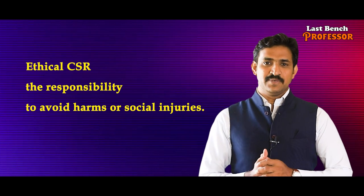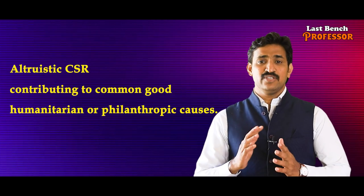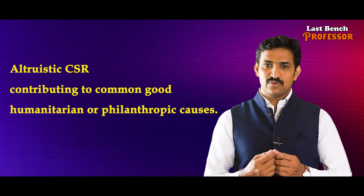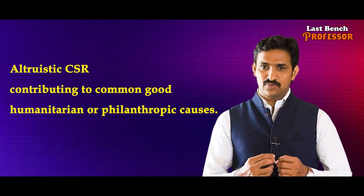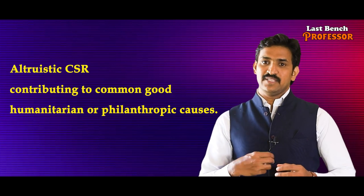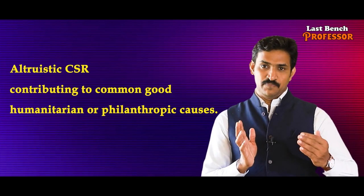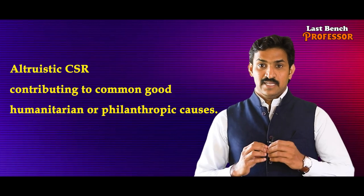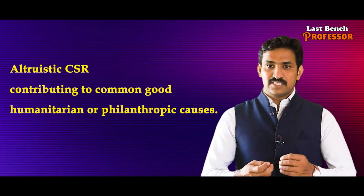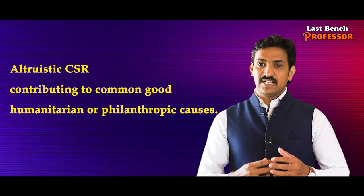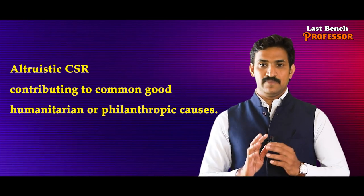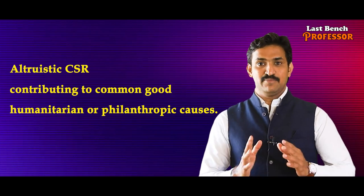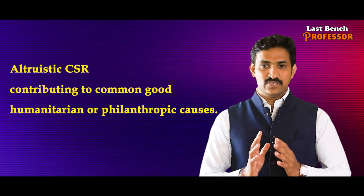The second type is called Altruistic CSR. Altruistic CSR is contributing to the goodness of society. The environment is affected by business, so we have to save resources. Examples include AIDS awareness, rallies and contributions, education for children, and providing electricity. All these things are done for good purposes — that is Altruistic CSR.